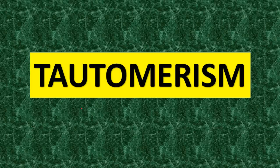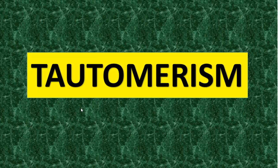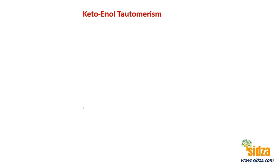Tautomerism. What is tautomerism? Keto-enol tautomerism is one of the most common examples of tautomerism. Let me explain this concept with an example of acetone.